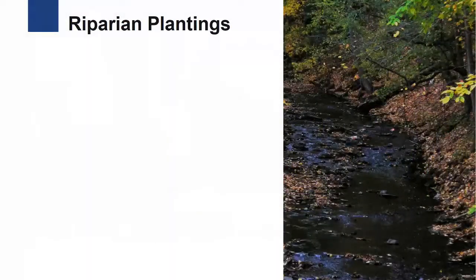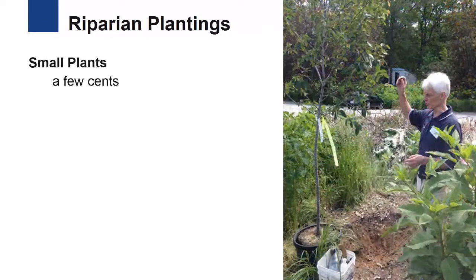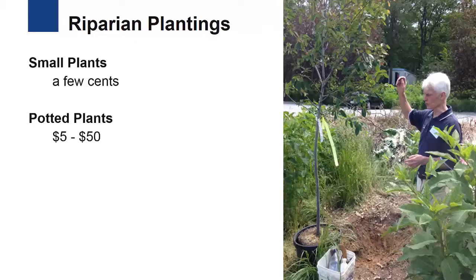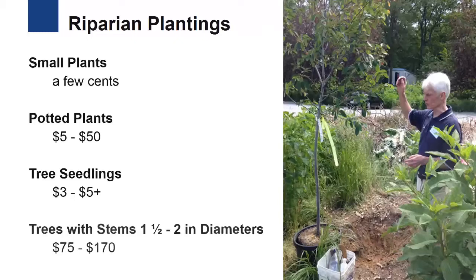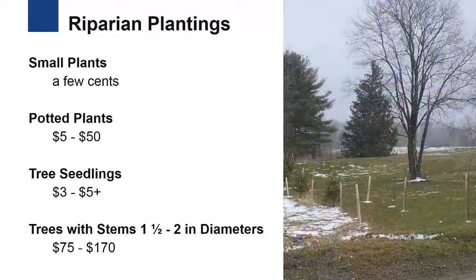One purpose is planting a riparian buffer alongside running water to protect the channel and bank zones. Small plants may cost a few cents or may be transplanted from within the site. Potted plants could be purchased for $5 to $50. Tree seedlings may cost from $3 to $5 or more.